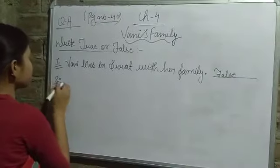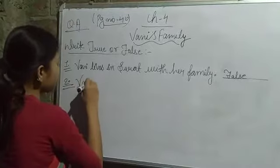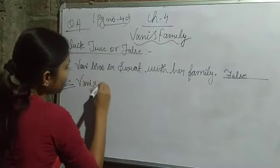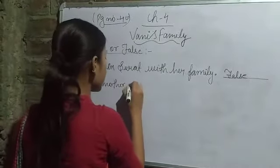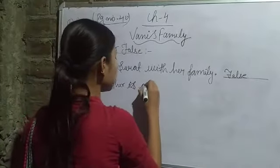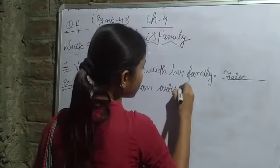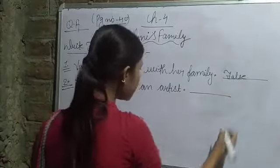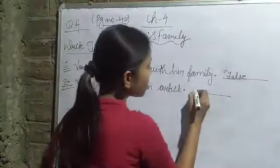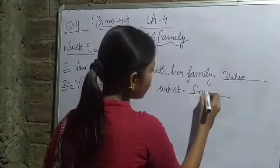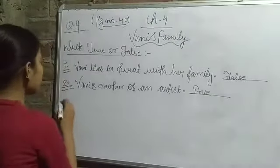Number 2: 'Vani's mother is an artist.' This is a correct sentence, so we have to write True here. Vani's mother is an artist — she is a painter — so this sentence is true.